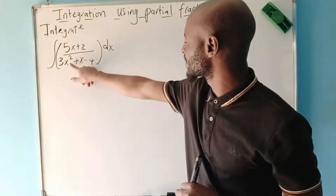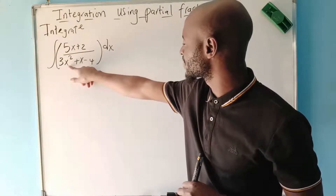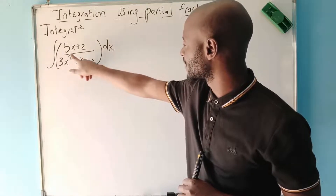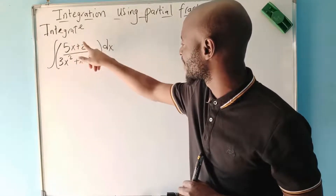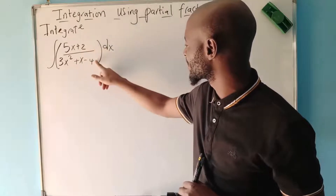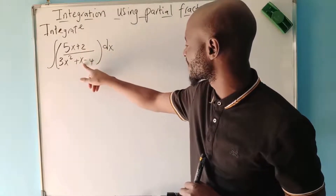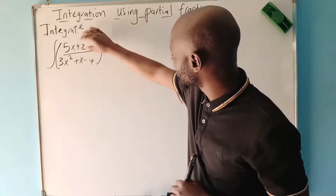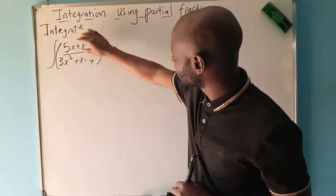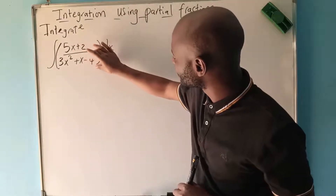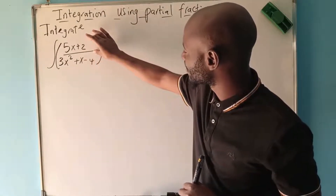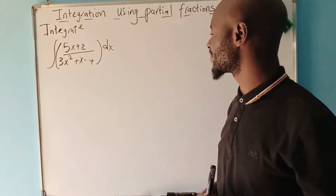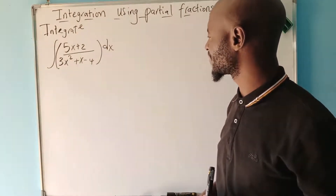Here, the highest power of x in the numerator is 1, and we have x to the power 0 and x to the power 2 in the denominator. So if the power in the denominator is more than the power in the numerator, then you can proceed to do your partial fractions.